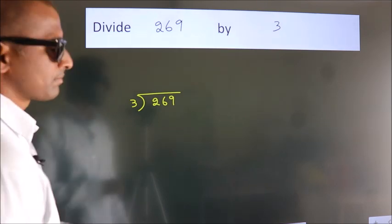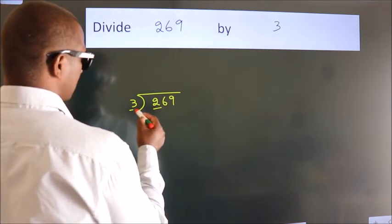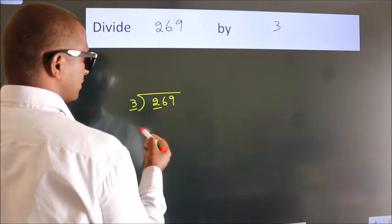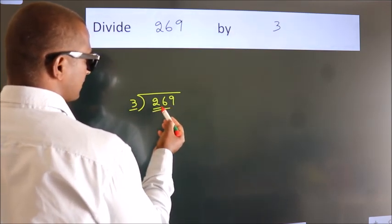Next, here we have 2, here 3. 2 is smaller than 3, so we should take 2 numbers, 26.